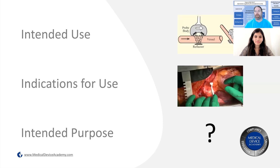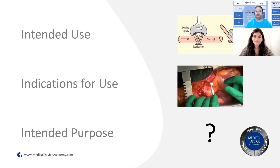The way this came about is the company has been in business for quite some time. They have products on the market, but when they were going through their renewal of their CE marking, they noticed that they don't have intended purpose in any of their labeling. So they wanted instructions written for them on how to define the intended purpose. This is a great opportunity to include intended purpose and put all three into one video.